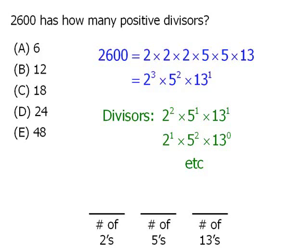Let's begin with the number of 2s. Since there are three 2s in our prime factorization, we can have 0, 1, 2, or 3 twos — four possible options. For 5s, we can have 0, 1, or 2 fives — three options. And for 13s, we can have 0 or 1 thirteen — two options.